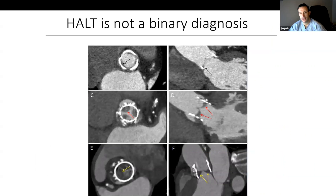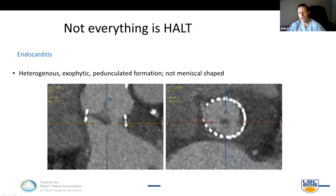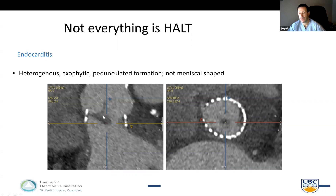HALT is a continuous variable. You can see different examples in a surgical valve — minimal HALT restricted to the base, or on the other end a HALT score of probably nine or ten involving at least 50 percent of multiple leaflets, or overt valve thrombosis with severe leaflet thickening involving all three cusps. When doing a post-implant CT, it is important to recognize that not everything hypo-attenuating is in fact HALT. To call HALT, you want to see thickening at the base extending to the tip and thinning at the tip. If it is thinnest at the base and thickest at the tip, that is not HALT — that is a target lesion or vegetation in the setting of infective endocarditis.